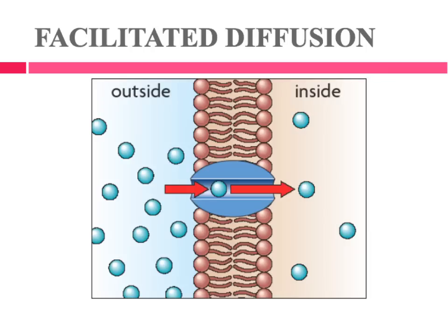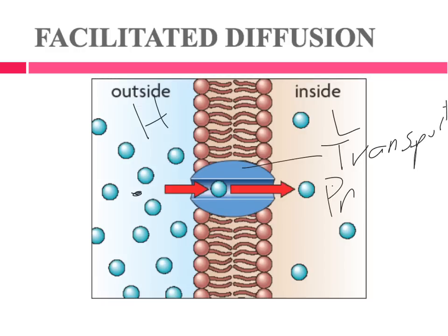Here is the book diagram of what I just drew. Here's your high concentration outside the cell and your low concentration inside the cell. Sometimes the high and low are going to be flip-flopped — maybe a molecule is highly concentrated inside and low outside. It doesn't matter; this can go in either direction, in or out. But it's always going to go from high concentration to low concentration through a transport protein.